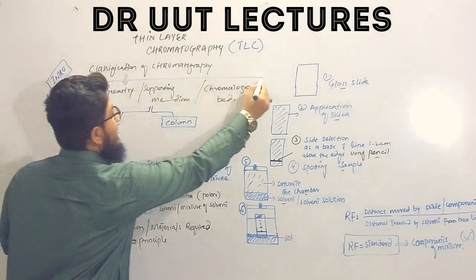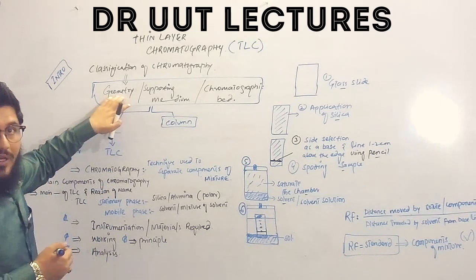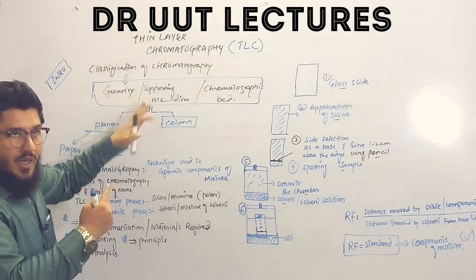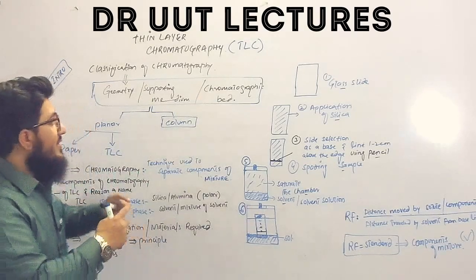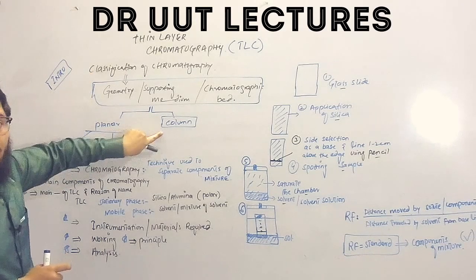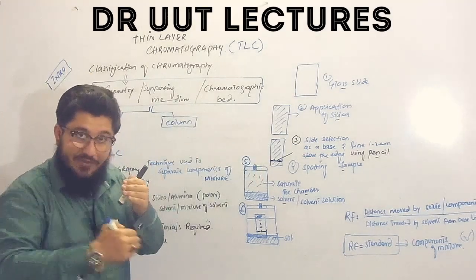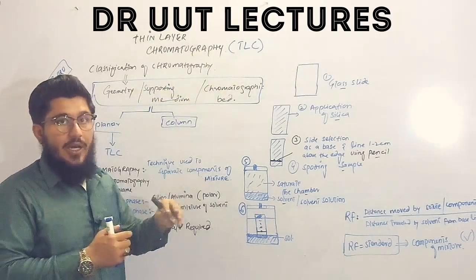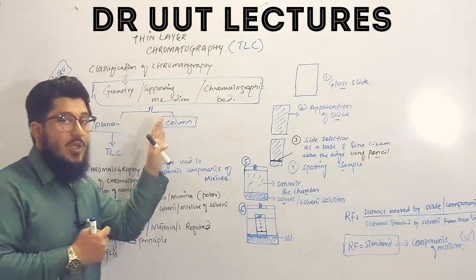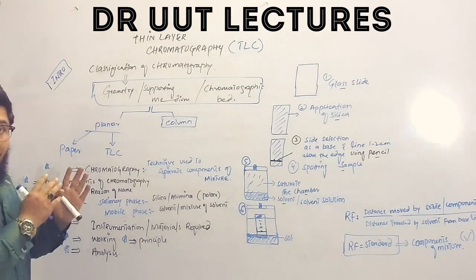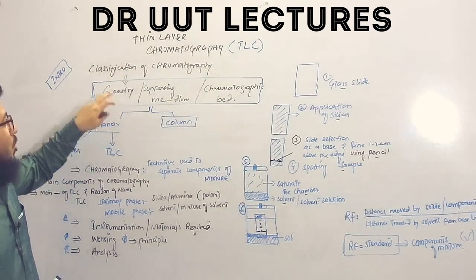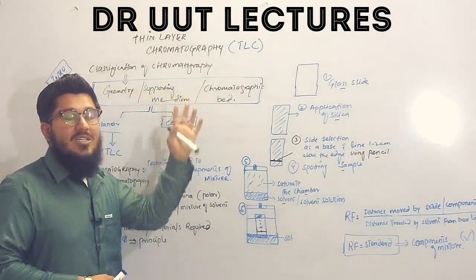This class is known by different names — by geometry, by supporting medium, or by chromatographic pad, depending on the textbook. According to this class, we have two types of chromatography: planar and column. Under planar, we have subtypes: TLC and paper chromatography. So TLC is actually a planar chromatography.